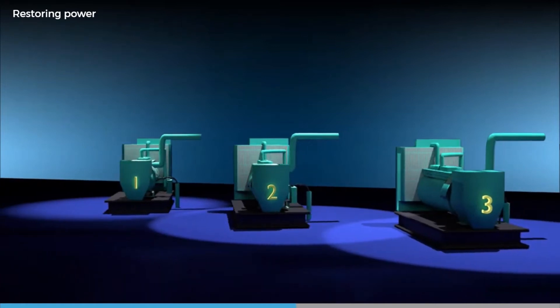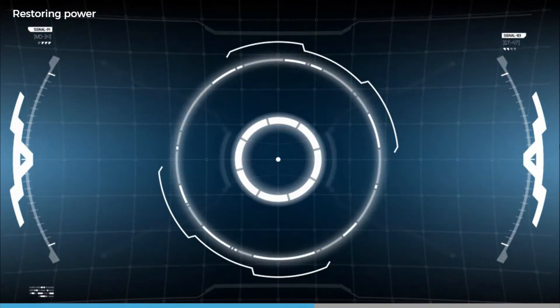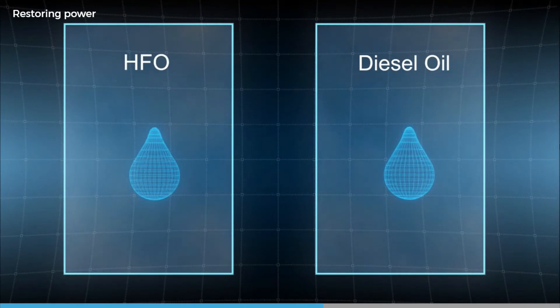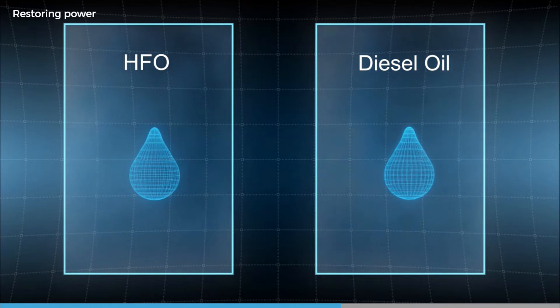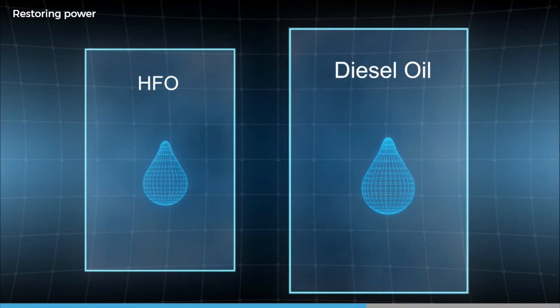So, know which main generator can be started in a blackout and how to do this. Consider if you can still start them on heavy fuel oil, because you may or may not have enough residual heat and steam to do this. Change over to distillate fuel if in doubt.